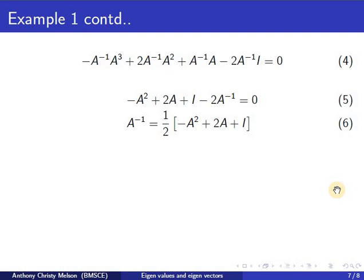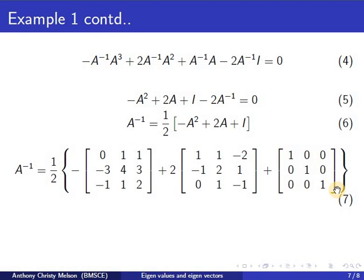Rearranging will give us A inverse equal to one-half times minus A squared plus 2A plus I. So substituting for A squared, A and I results in equation 8, which is the inverse of the square matrix A.